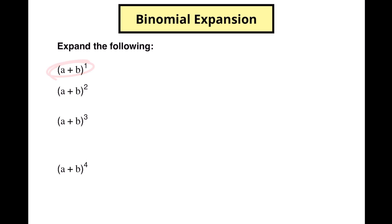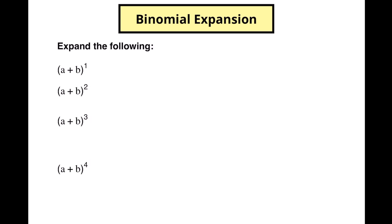So let's say we've got these different binomials here. You can see we've got one going to the first power, the second power, the third power, and the fourth power. Let's expand these out and see what happens. So the first thing I'm going to do is a plus b to the first power — well that is just a plus b. That's pretty straightforward.